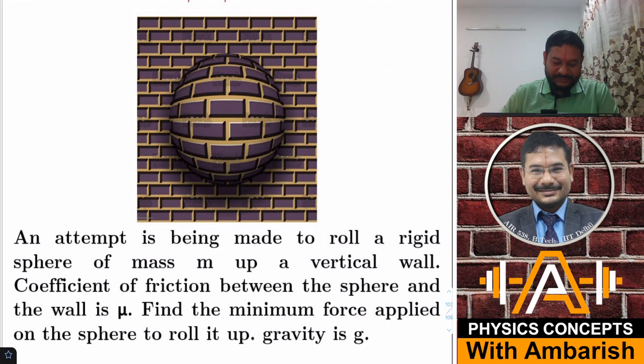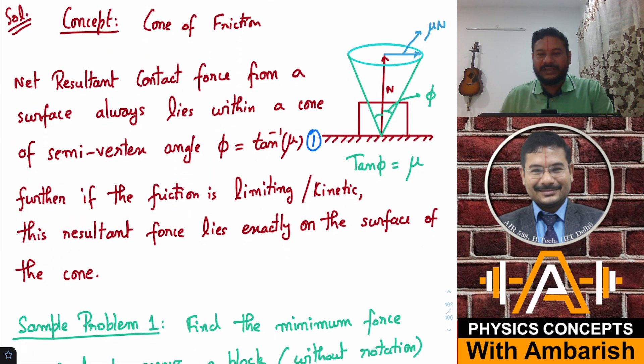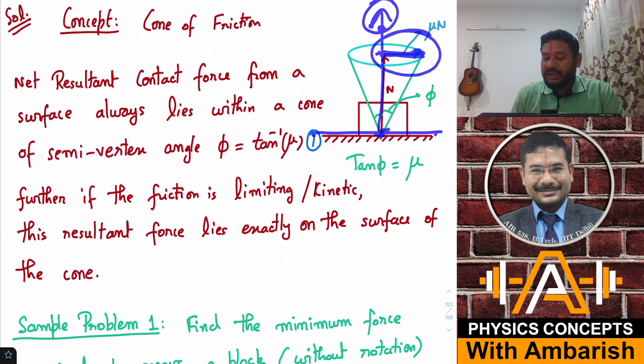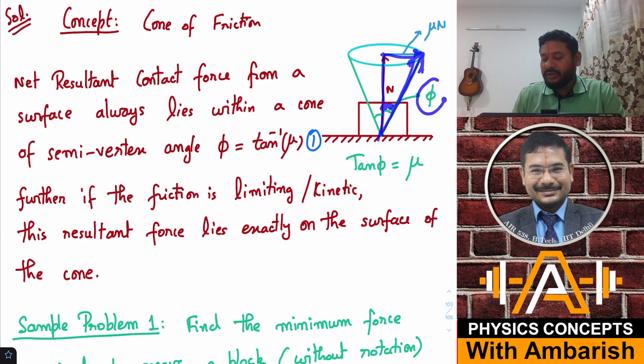So first thing I want to teach you here is the concept of cone of friction. What do we understand by cone of friction? Whenever we have a rough surface, normal reaction will be acting perpendicular to this. And what can be the maximum value of friction? You know that friction cannot exceed μN. So this is the maximum possible value of friction. What is the net contact force? The net contact force is the resultant of the normal reaction and μN. You can see that when the friction could be less than μN also, if it's limiting, then it will be μN. So when the friction is μN, then the resultant force lies here at some angle φ. So the tan φ is equal to μ, because this is μN and this is N.